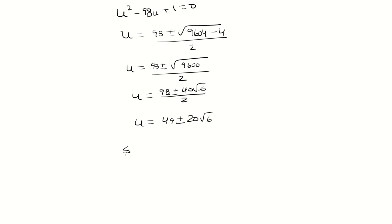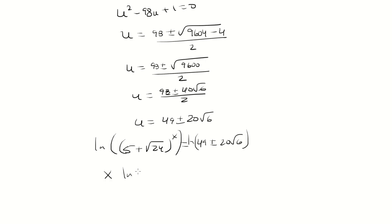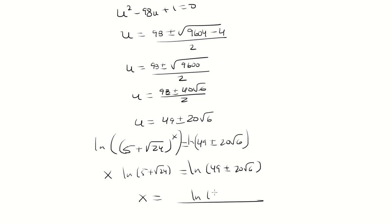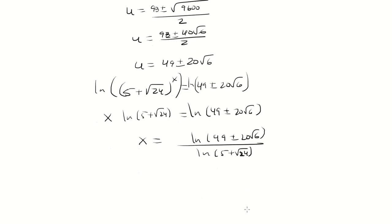We said u was 5 plus the square root of 24 raised to the x. So I'm going to take the log of both sides. That gives x times log of 5 plus square root of 24, and then I divide both sides by log of 5 plus square root of 24. Simplifying, I get x is equal to 2 and negative 2. And that is my answer.